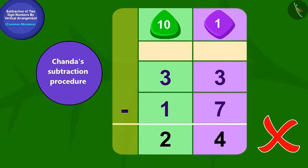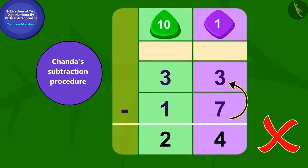Is this the correct procedure? While subtracting, we should subtract the digit of the smaller number from the digit of the larger number. Did Chanda do this while subtracting? No — Chanda subtracted the bigger number from the smaller number. That's why Chanda's answer is wrong.